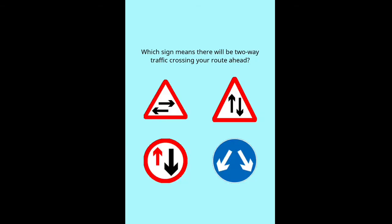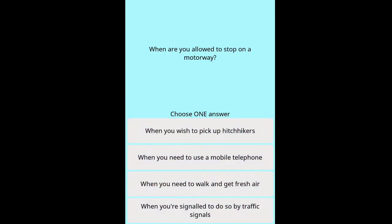Question: Which sign means there will be two-way traffic crossing your route ahead? Question: When are you allowed to stop on a motorway? Options: when you wish to pick up hitchhikers, when you need to use a mobile telephone, when you need to walk and get fresh air, when you're signalled to do so by traffic signals.